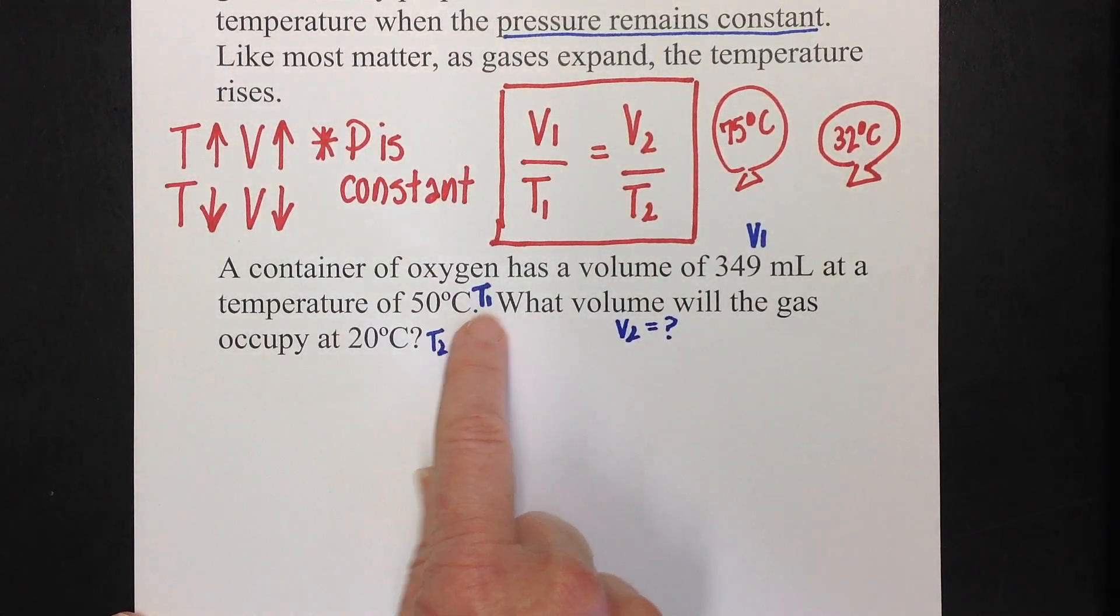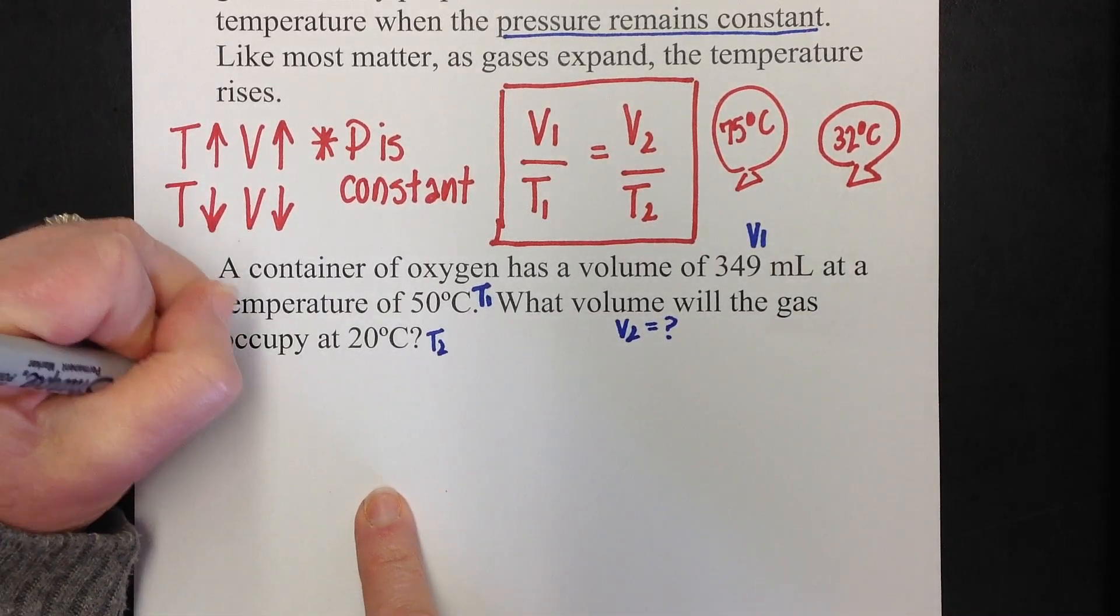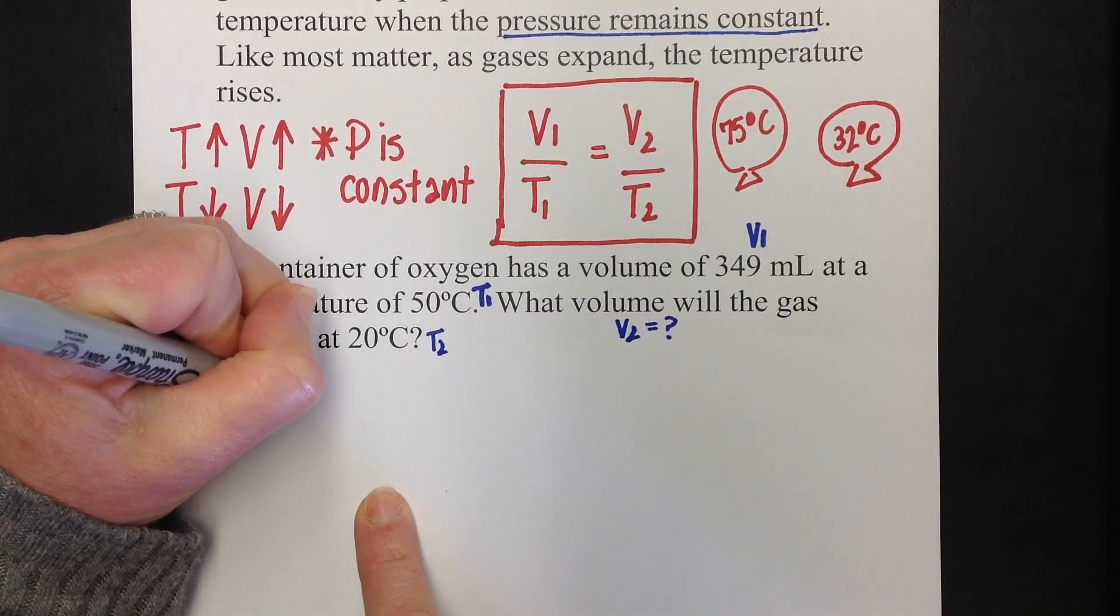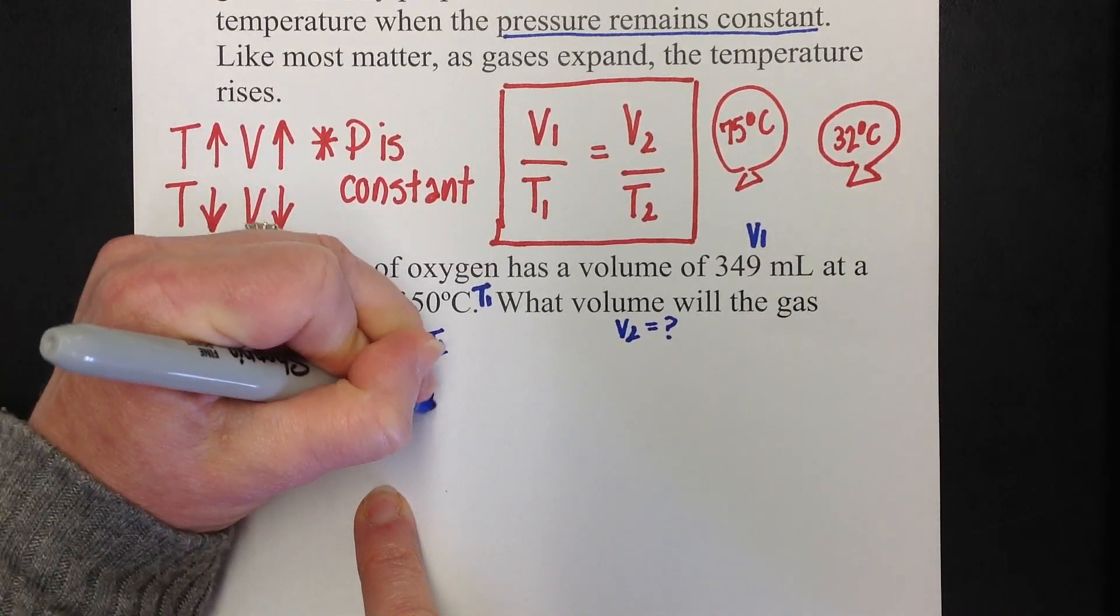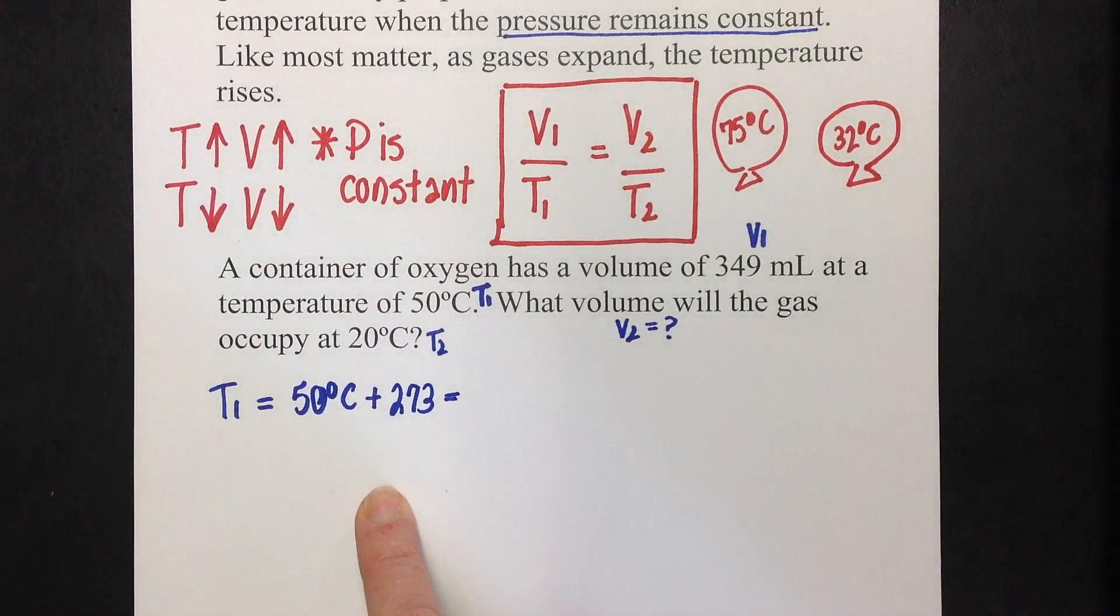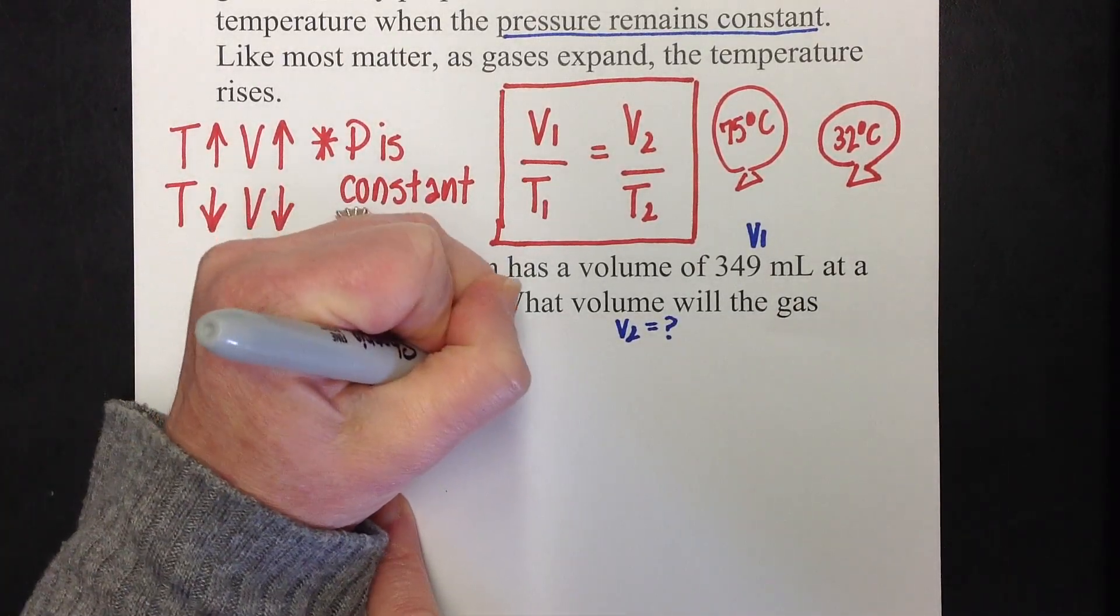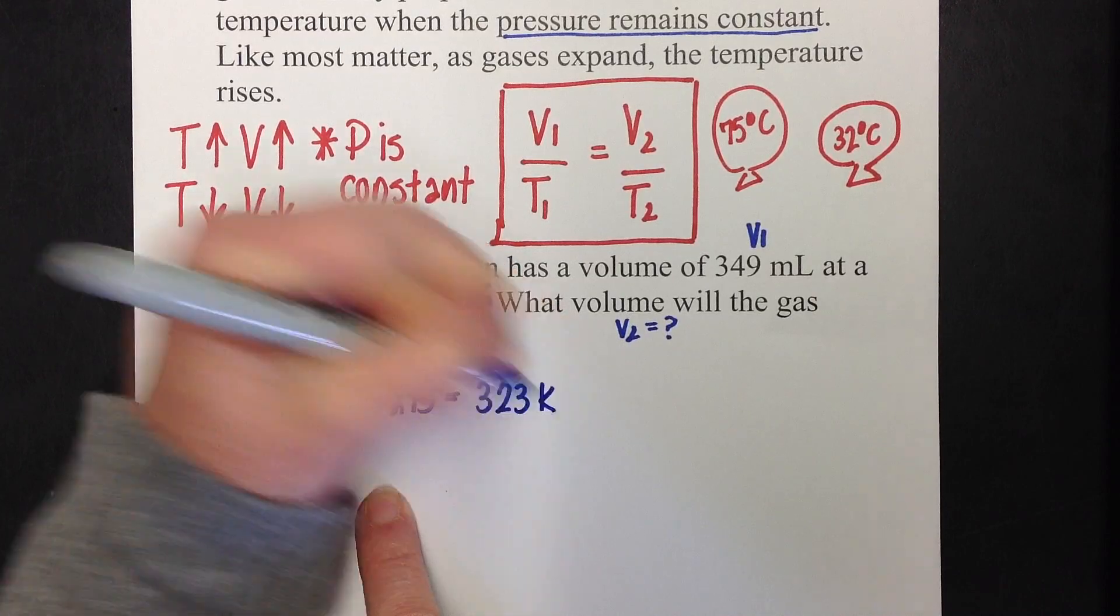Now, before I do anything, I'm going to go ahead and change my T1 and my T2 to degrees Kelvin. So, T1 equals 50 degrees Celsius plus 273, and 50 plus 273 is 323 Kelvin.